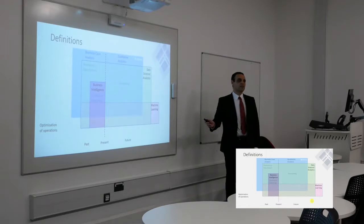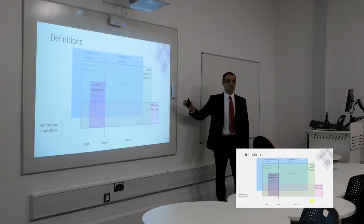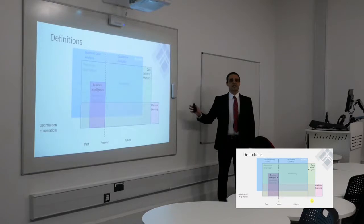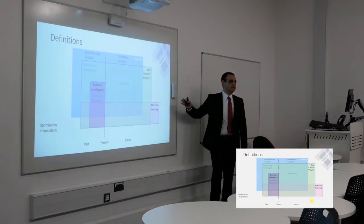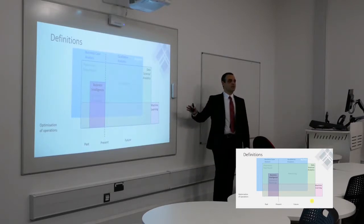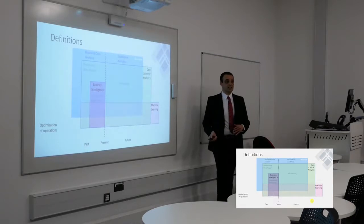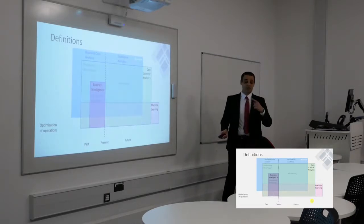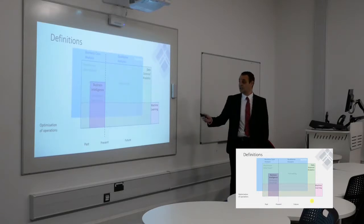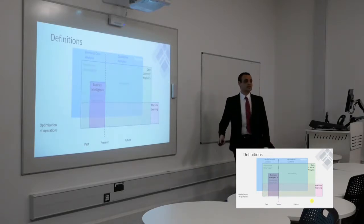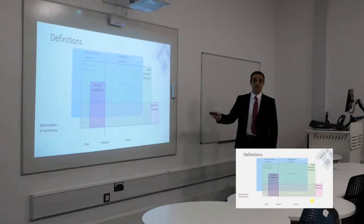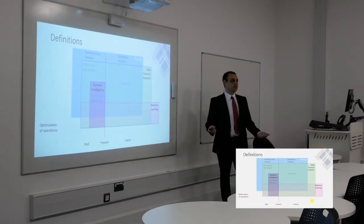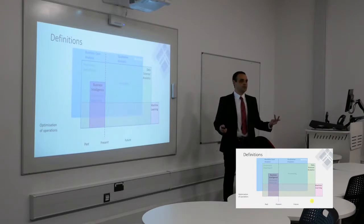Then we have machine learning, which is partially related to data science and analytics, but can extend beyond that. The main difference between traditional analytics and machine learning is that machine learning can deal with both structured and unstructured data — you can think of unstructured data as videos, images, and audio. The computer can understand text documents, images, videos, and do analysis of all of that.